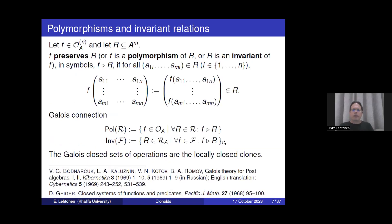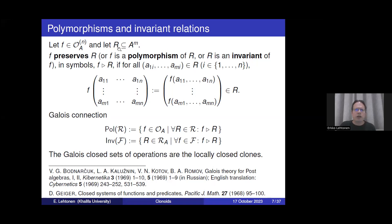Now let me get back to some notions from the theory of clones, or rather the theory of polymorphisms and invariant relations. This is a well-known result from clone theory. We say that a function or operation F on the set A preserves the relation R on the same set if we take any matrix whose columns are tuples from R, apply F to the rows, and the resulting tuple is again in R. If this always happens, we say F preserves R, or F is a polymorphism of R, or R is an invariant of F.